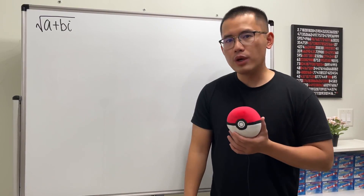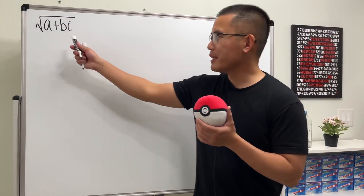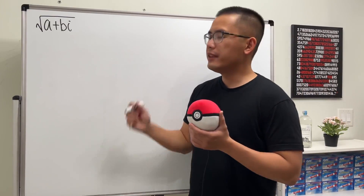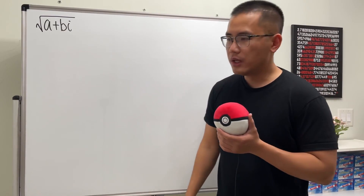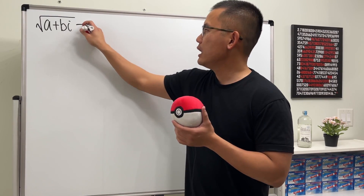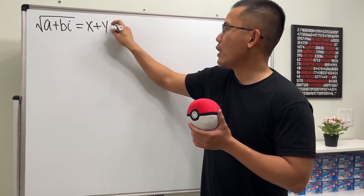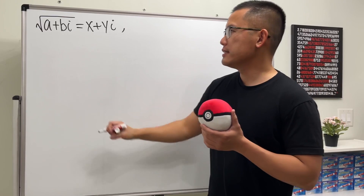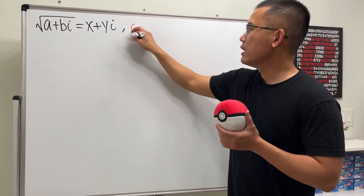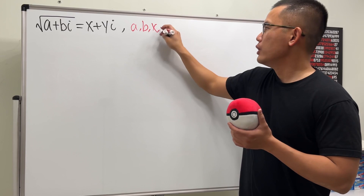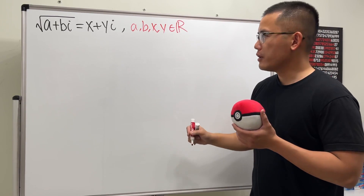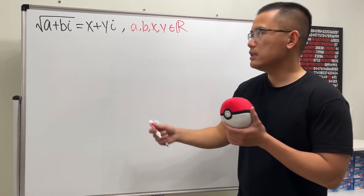Today we are going to find both square roots of a complex number a + bi. The result will also be a complex number. The first step is to call this x + yi, and the key is that a, b, x, and y all have to be real numbers.